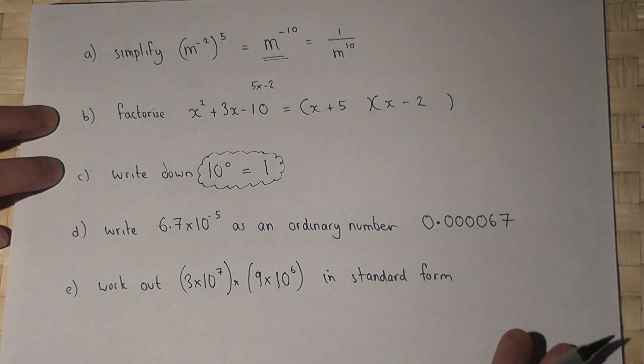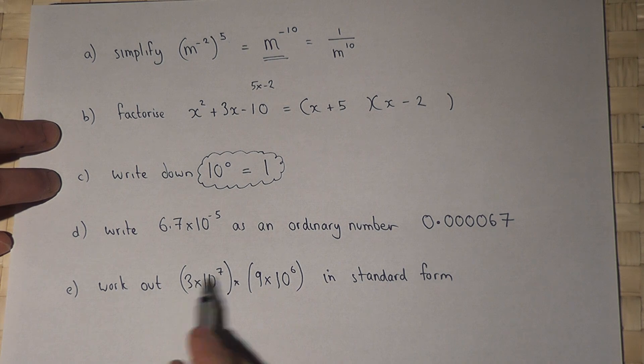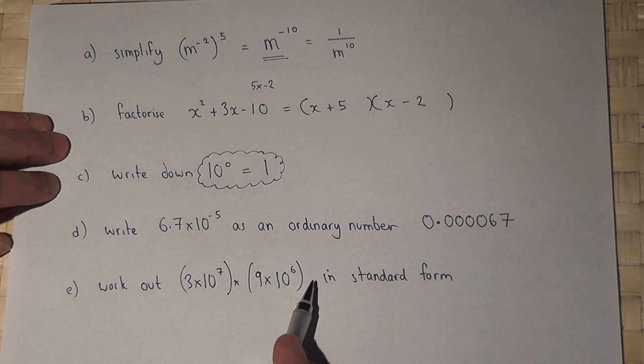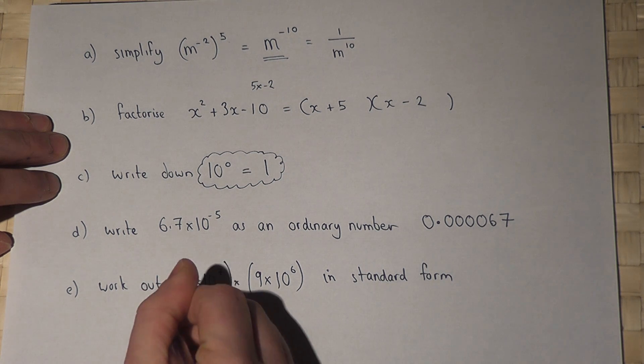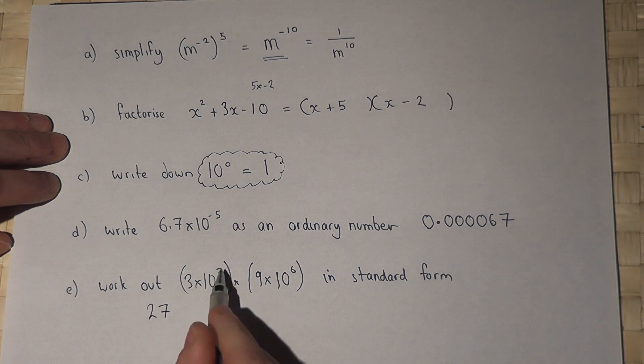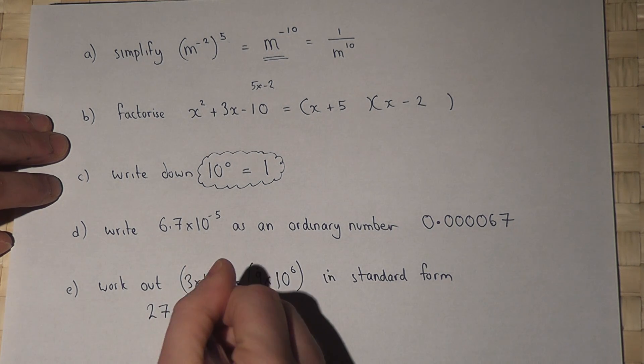Now in part e, I need to work out a calculation. Three times nine is twenty-seven, and ten to the power of seven times ten to the power of six is ten to the power of seven plus six, which is thirteen.